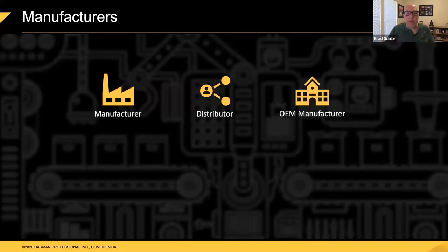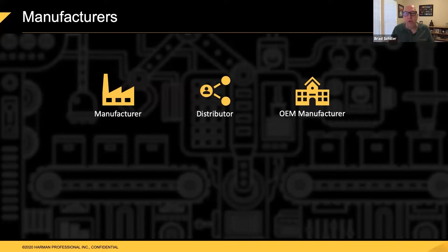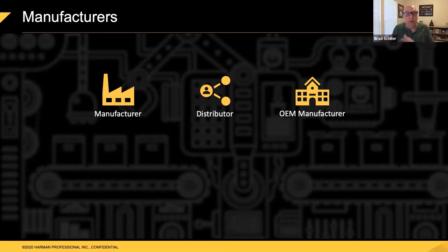There are also OEM manufacturers — they just own the factory, build lights, and sell them to other people. They might not have their own brand — they just concentrate on being a factory. Companies like Golden Sea and Acme do this in China. In fact, Robe actually started off that way as well — they started building lights for other companies and then shifted over to making their own brand after learning from building for someone else.